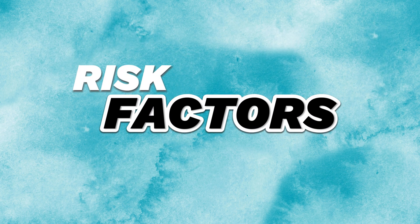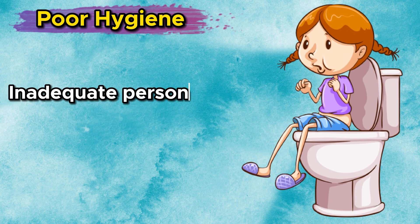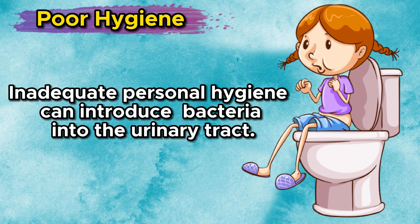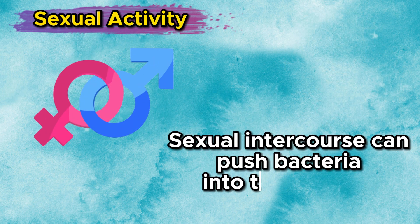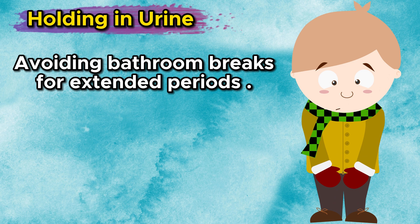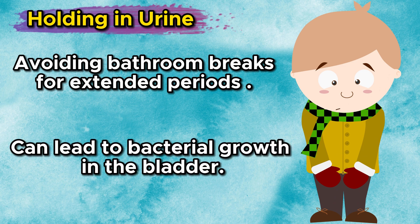Now let's talk about the risk factors of UTIs. While bacteria are the primary culprits, several factors can increase your risk of developing a UTI. Poor hygiene — inadequate personal hygiene can introduce harmful bacteria into the urinary tract. Sexual activity — sexual intercourse can push bacteria into the urethra, increasing the risk of infection. Holding in urine — avoiding bathroom breaks for extended periods can lead to bacterial growth in the bladder.